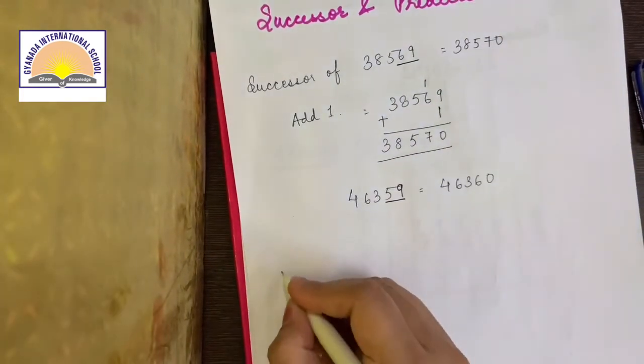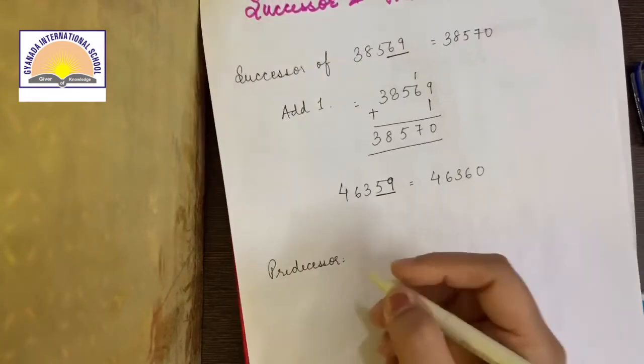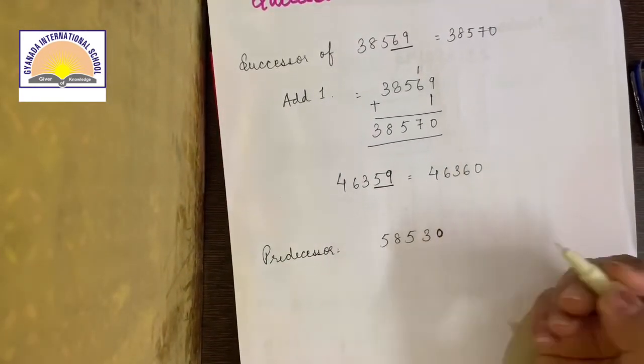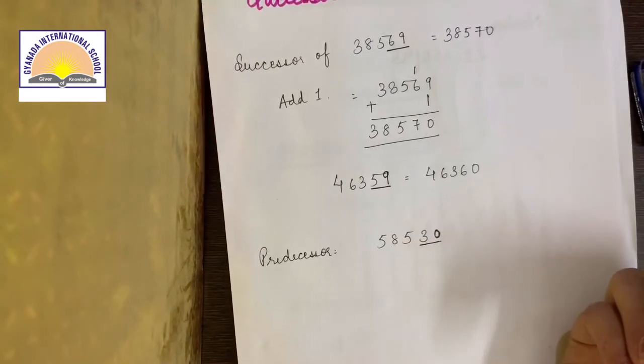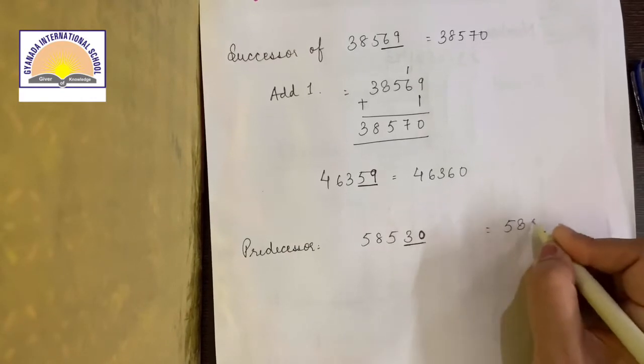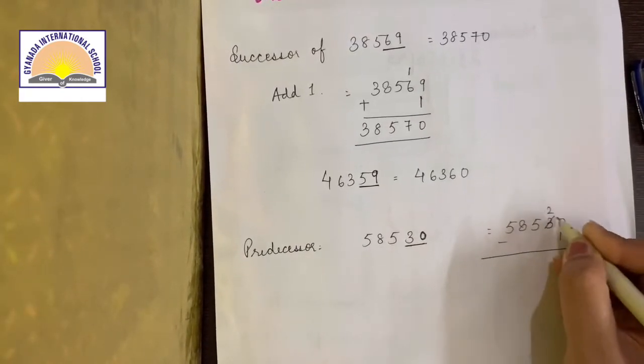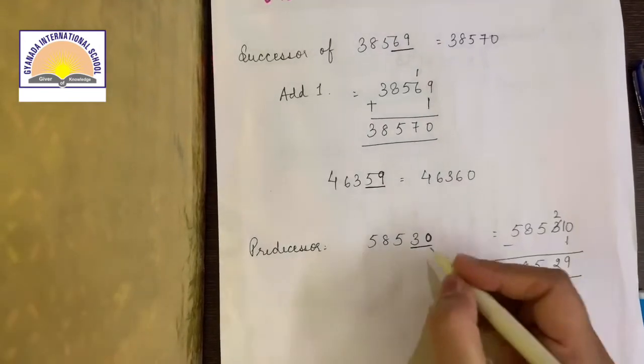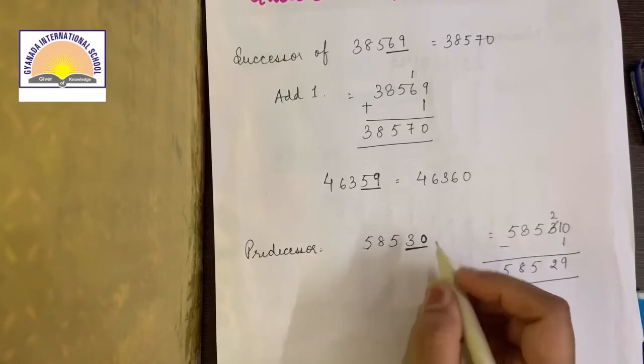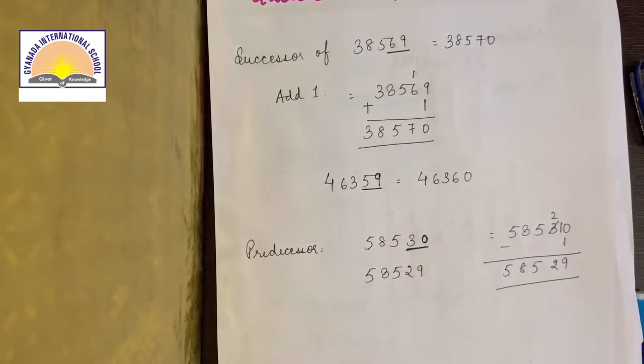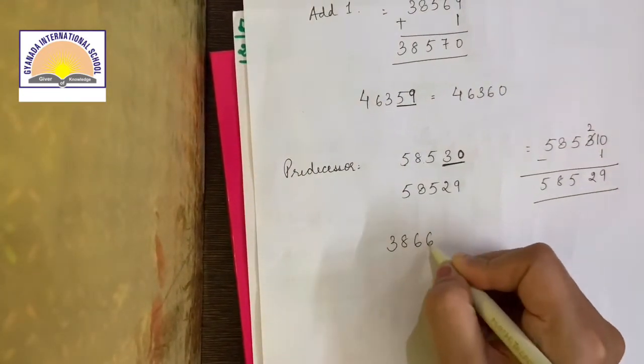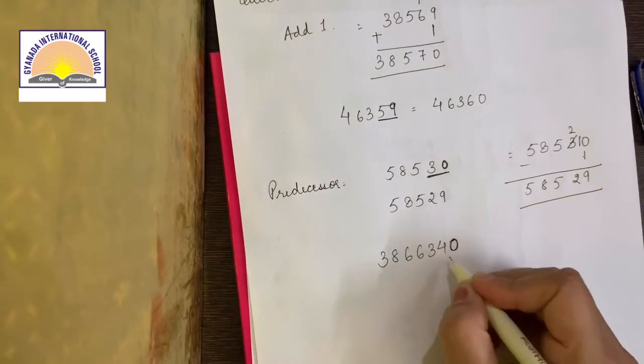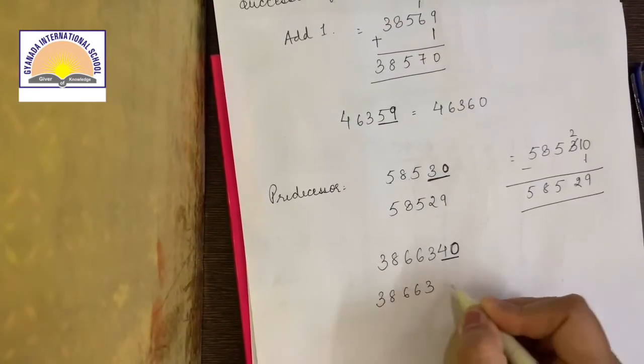And you can simply add one. Usi tarike se agar main predecessor ki baat karou. Agar woh bolein predecessor of 58530. Aap zero se pehle kya aata hai? Zero se pehle toh kuch nahi aata. Toh aap pura two digits dekhoge. Toh isme kya banne ga predecessor? Ya toh aap minus karke dekho. Minus one. Agar aap minus one karo ge, toh aapko yahan se borrow lena padega. Ten minus one nine, two, five, eight, five. Ya toh aap aise kar sakti ho. Ya phir aap seedha kya karo ge? One digit ki jagah two digit dekhoge. Aur five eight five three zero ka predecessor ban jaayega five eight five two nine. Similarly, agar main kahun three eight six six three four zero, find its predecessor. Toh zero se pehle toh kuch bhi nahi aata. Toh hum pure two digits lenge. Aur forty se pehle aata hai 39.